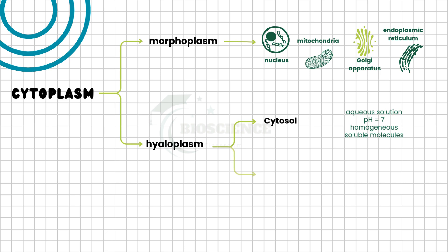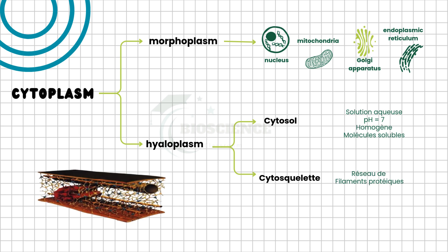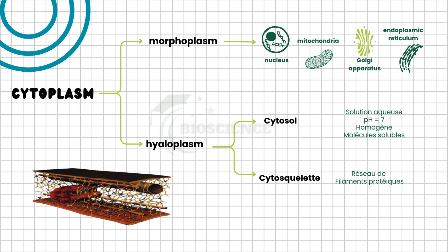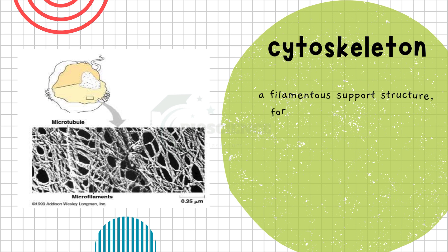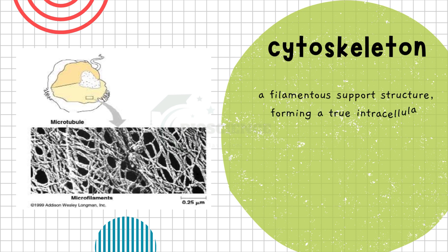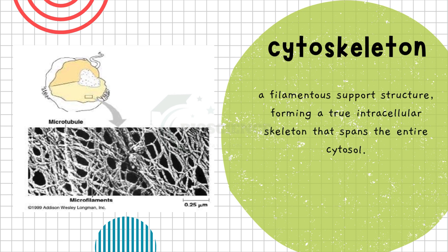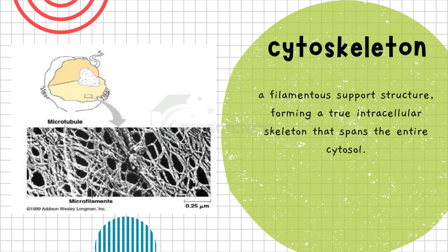The cytoskeleton represents a network of protein filaments that maintains the cell's structure and enables intracellular transport. This image illustrates the complexity and structured organization of the cytoskeleton, visually demonstrating its role in supporting the cell. The cytoskeleton is described as a filamentous support structure, forming a true intracellular skeleton that spans the entire cytosol.